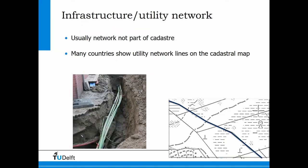Another type of object resulting in 3D parcels is networks. Utility networks are often below the surface, sometimes above the surface. In many countries they are shown on the cadastral map, but not in 3D.